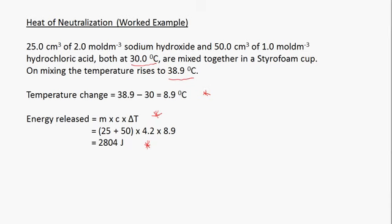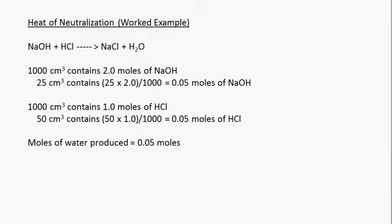Now we need to write an equation for this reaction: sodium hydroxide plus hydrochloric acid produces sodium chloride and water. We take the information given to determine how many moles of sodium hydroxide and hydrochloric acid we have in the mixture. The reason for this is to determine how many moles of water we are dealing with.